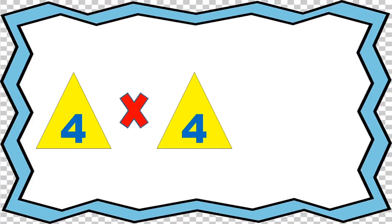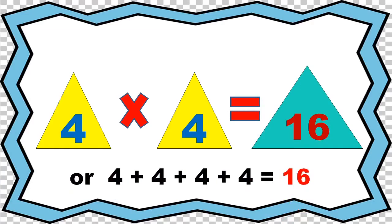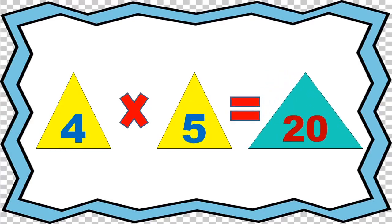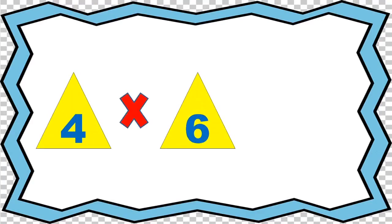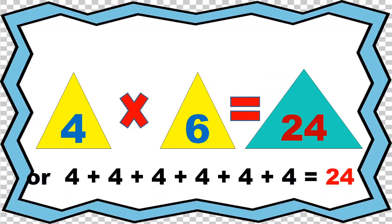4 times 4 equals 16, or 4 plus 4 plus 4 plus 4 equals 16. 4 times 5 equals 20, or 4 plus 4 plus 4 plus 4 equals 20.